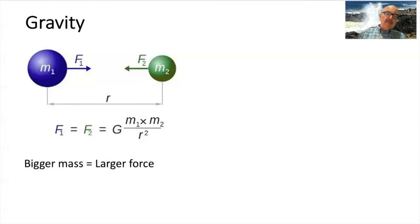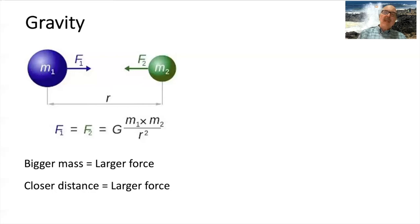The bigger the mass, the larger the force; the closer the distance, the larger the force. So the moon, even though it's not nearly as massive as the sun — it's only about 1/180th of the mass of the earth — pulls on the tides more than the sun, which is super massive but is such a far distance away. That distance squared really diminishes the force of the sun.